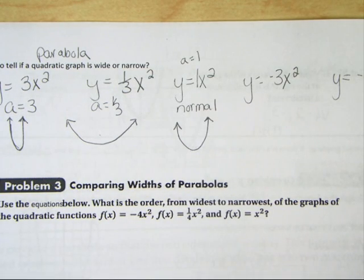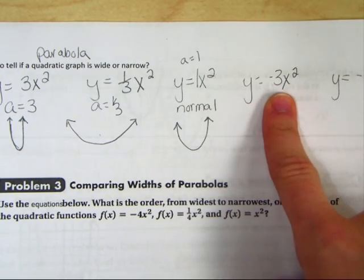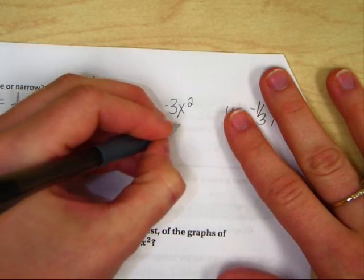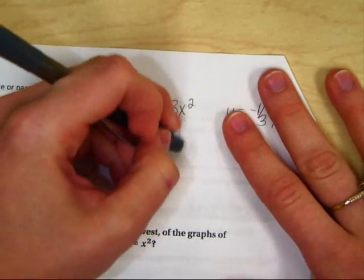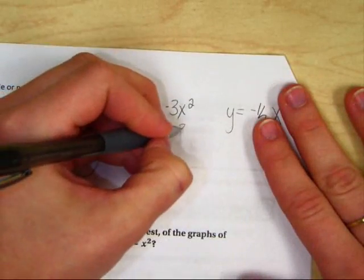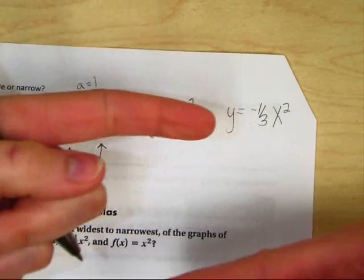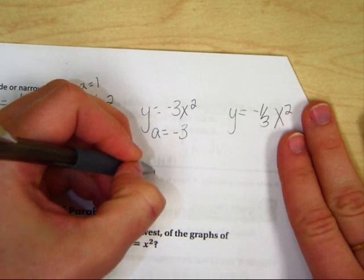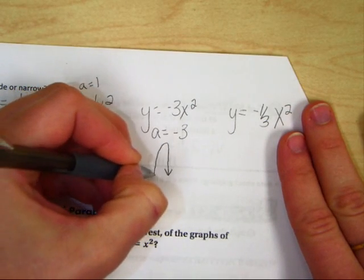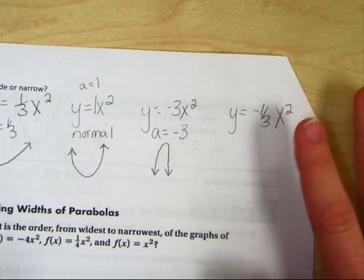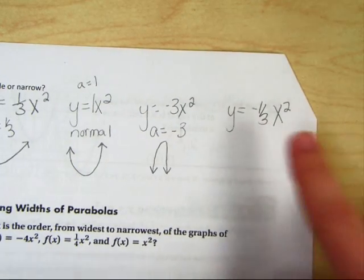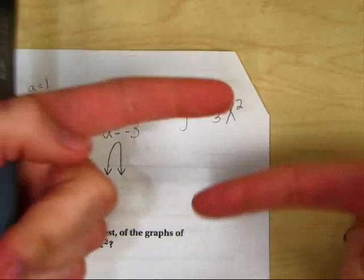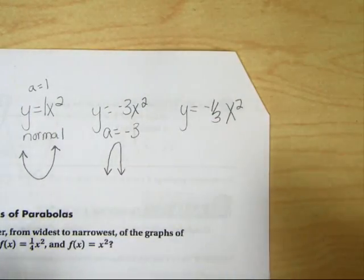Now, let's go ahead and compare that to y equals negative 3x squared. Well, a is negative 1, so what that's going to do is it's going to flip your parabola upside down and it's going to make it very narrow. The upside down comes from the negative. The narrow part comes from the 3. The last one, y equals negative 1 third x squared, it's going to flip it upside down and it's going to make it very wide.